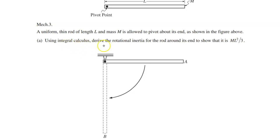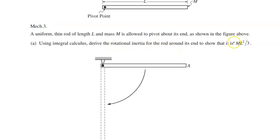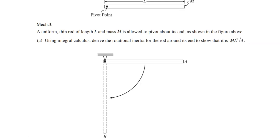So let's see. Using integral calculus to derive the rotational inertia for the rod around its end to show that it is ML squared over 3. Okay, so those of you in my AP Physics class, we very likely have not learned that. You're probably like, okay, Ms. Walker, you're a horrible teacher. I apologize. But it's one thing that it's not the end of the world if we don't get to it.